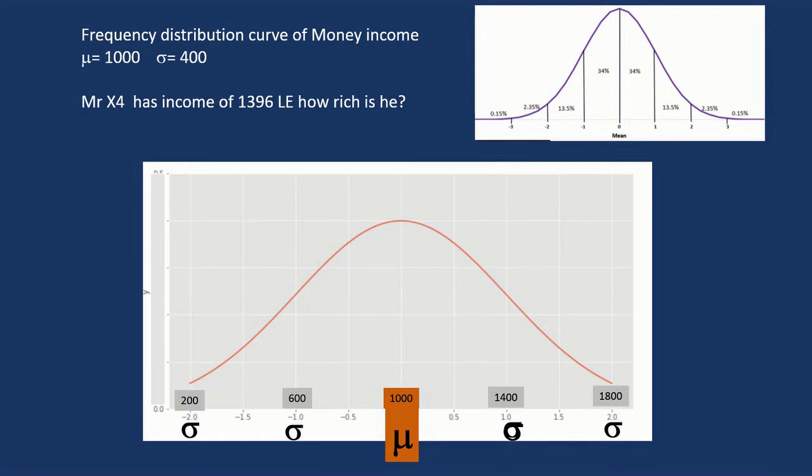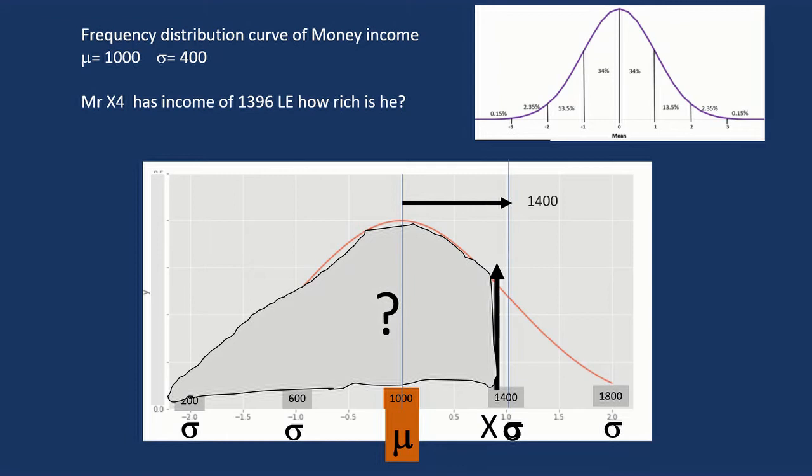Suppose we have this question. Mr. X4 has an income 1,096. So this is one standard deviation. And Mr. X5 has an income of 1,396. So we cannot determine exactly the area below this value.